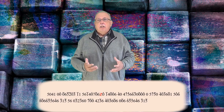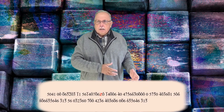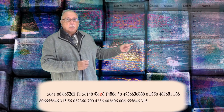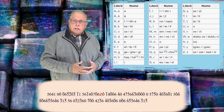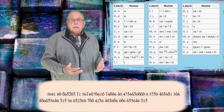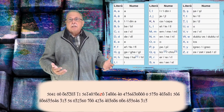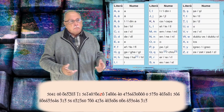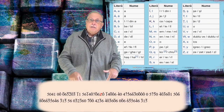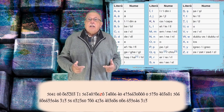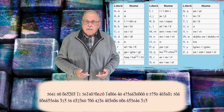Avem deci în total 30 de semne care înlocuiesc literele. Dar alfabetul limbii române are 31 de litere, ceea ce înseamnă că una dintre ele trebuie să rămână necifrată. Și noi știm deja, din textul cifrat, că acea literă este Z.